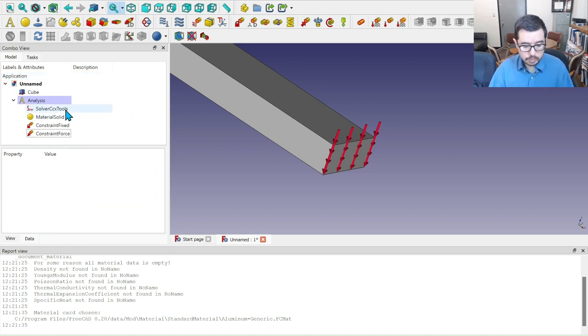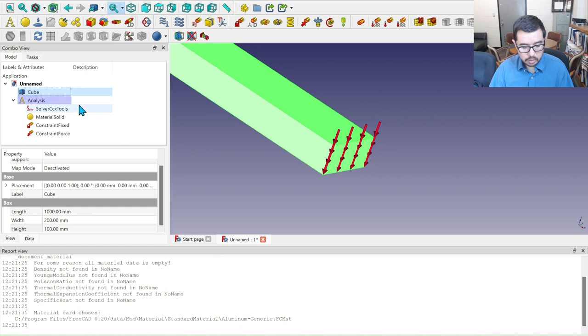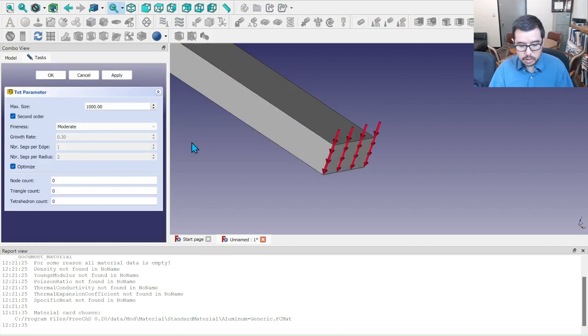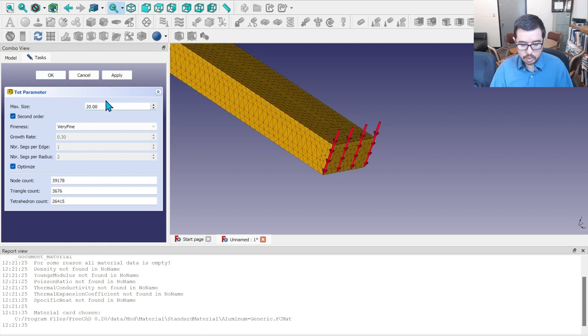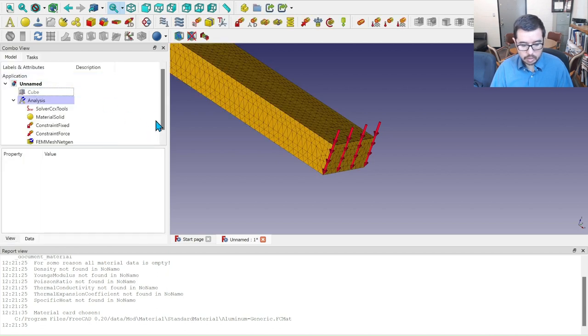So now you can click here on the cube and we're going to add a mesh. And here we're going to make it very fine. And we're going to drop the maximum size element down to 20. And we're going to apply hit okay.